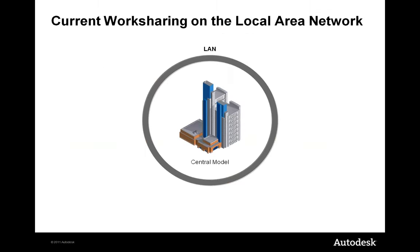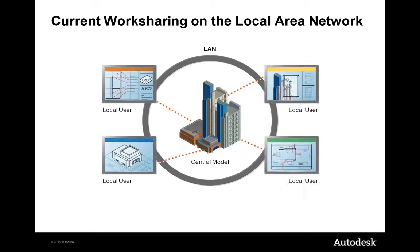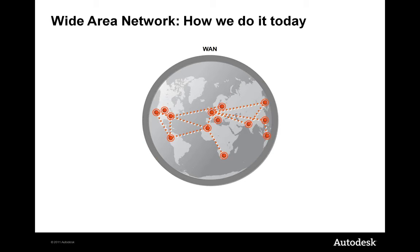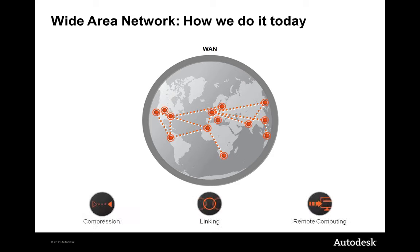Those who use Revit are probably familiar with sharing over a local area network, which is a simple process — your central model on the server and all local users on the LAN can easily access it. But across a wide area network spread across the country or globe, that gets much more difficult due to the size of Revit models and keeping everybody in sync, involving a lot of compressing, linking, and remote computing.